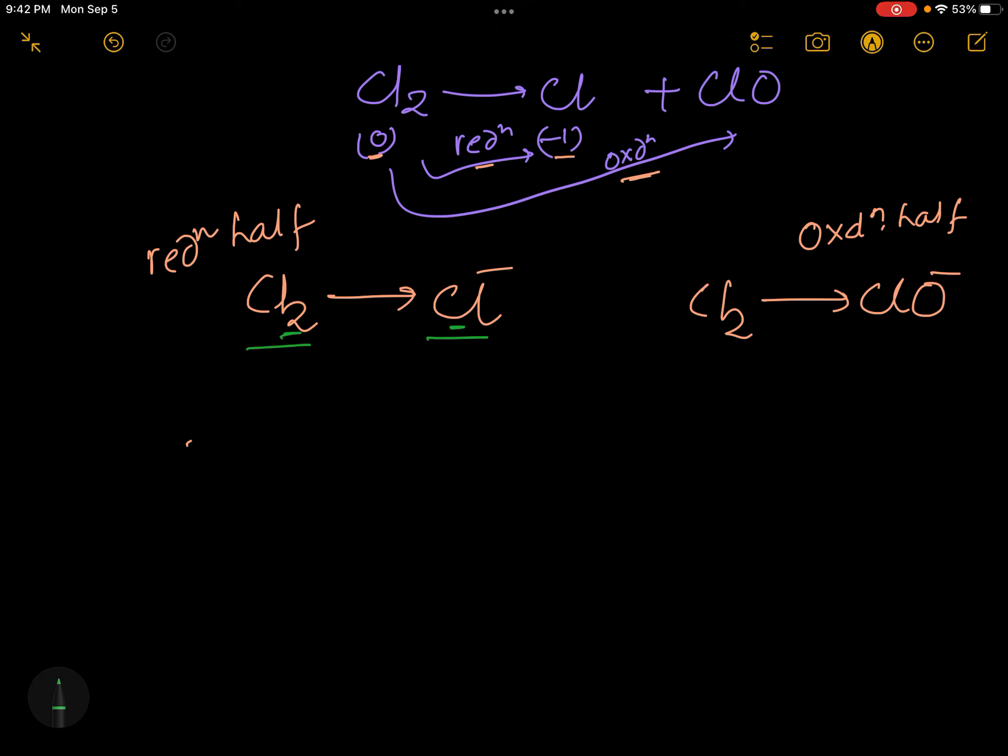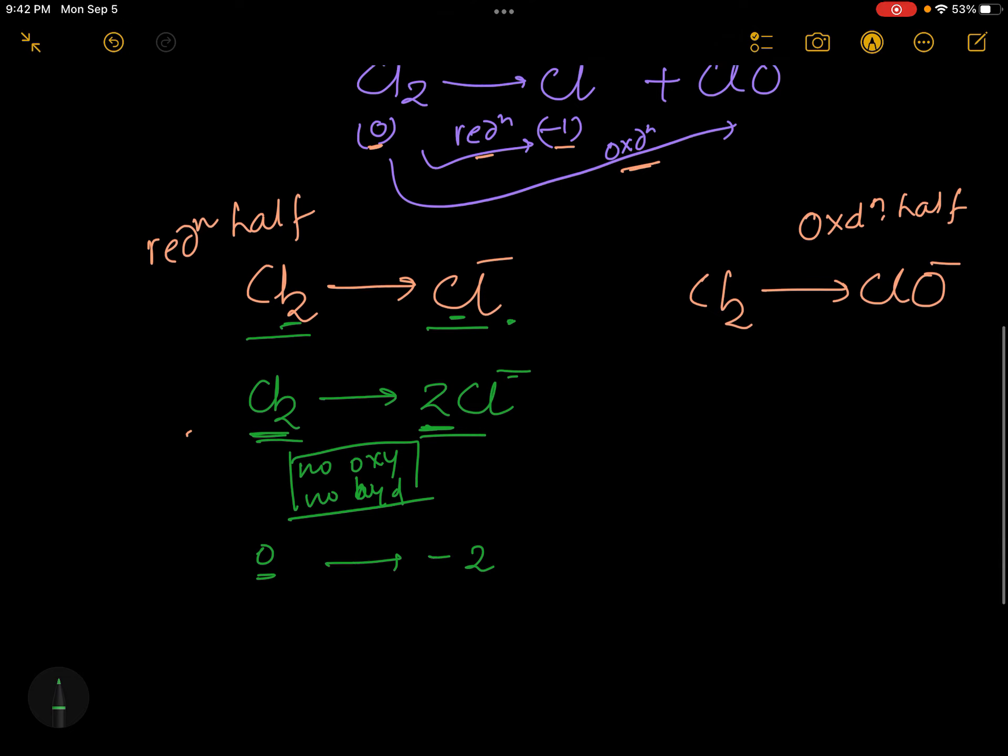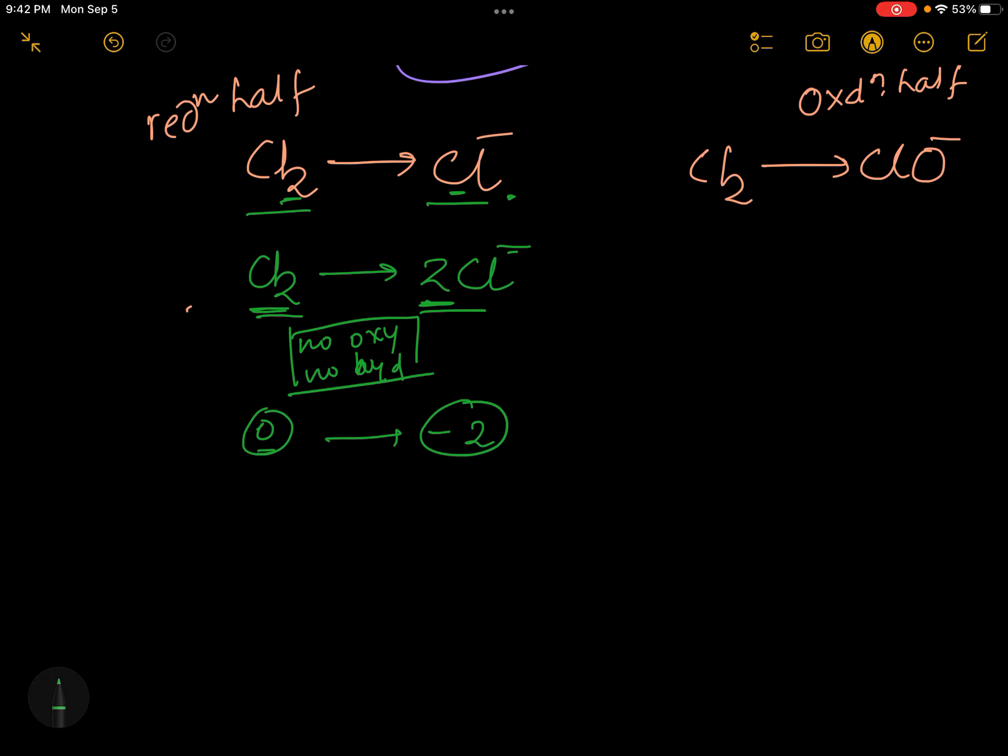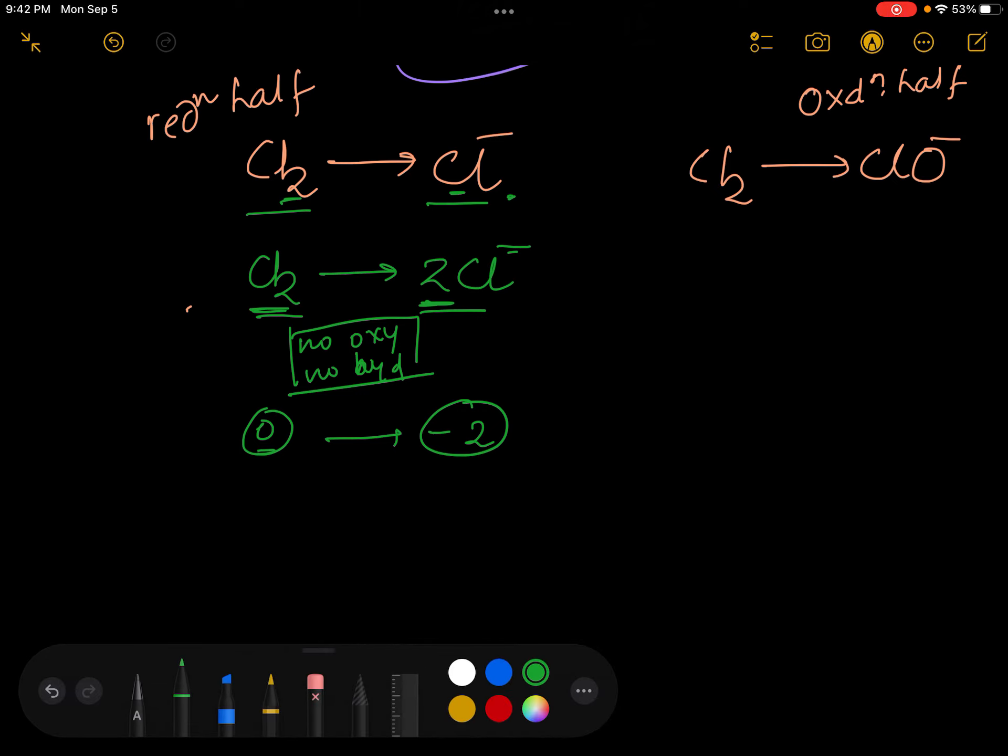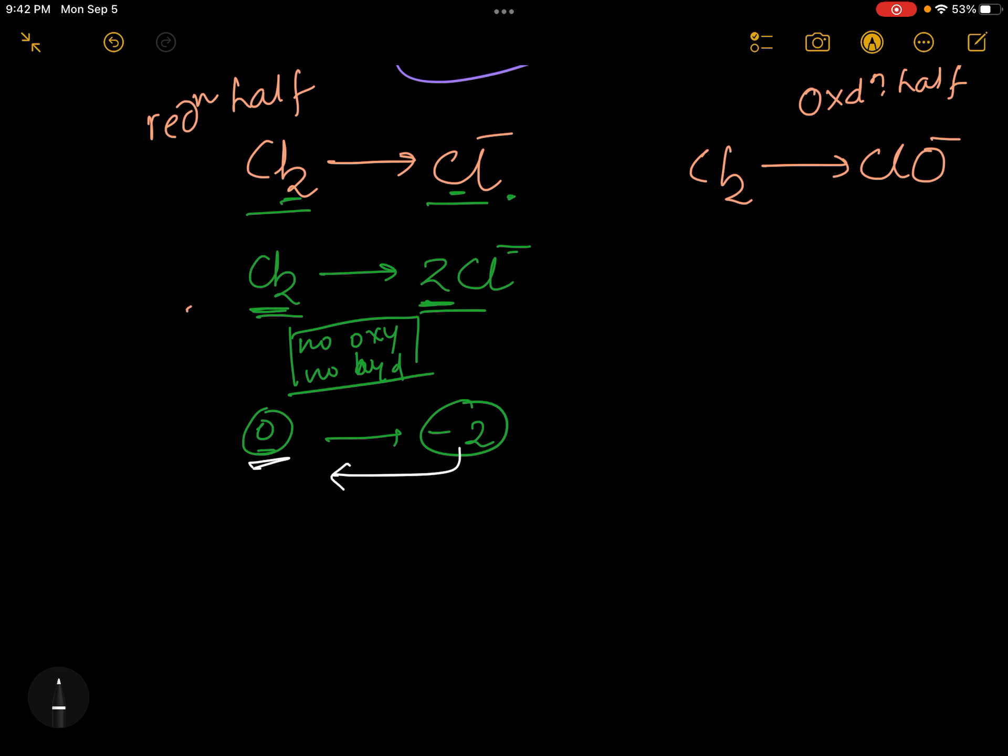Now, Cl2 to Cl minus - first we will balance the chlorines. So Cl2 gives rise to 2Cl minus. Here no oxygens, no hydrogens, nothing. You just need to see what is the charge. Cl2 has no charge, so this side is zero charge. And here we have two minus charges. This side we have two minus charges. So here this is zero and this is minus two.